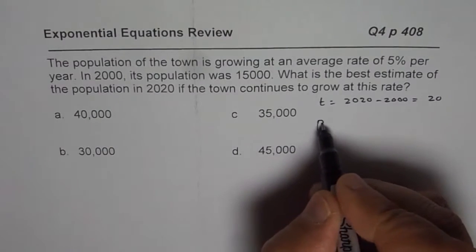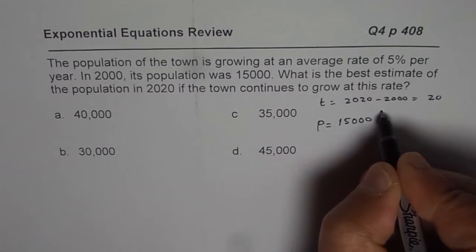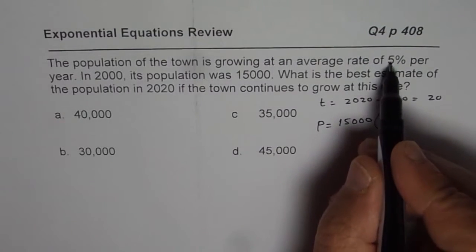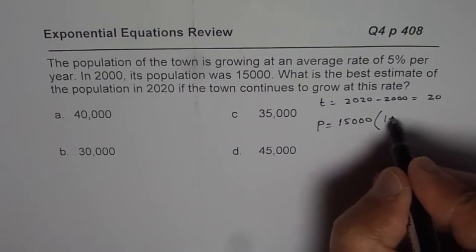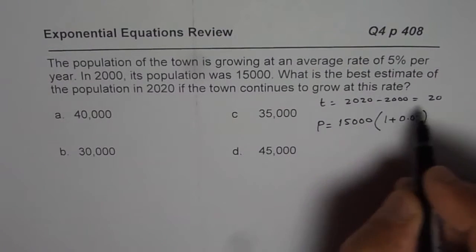Population P, let us say, is equal to initial population is given to us as 15,000. It is growing at the rate of 5%, that means 1 plus 0.05 to the power of 20, right?